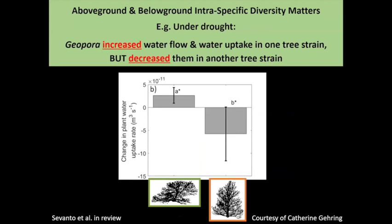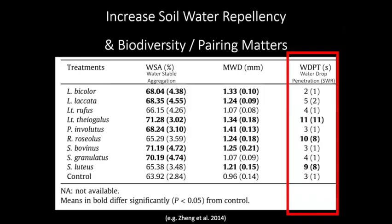Coming out of our lab at NAU, we looked at pinyon pines of the same locations and same species but two different genetic strains. Giopera is a genus of mycorrhizae, and in the tree it normally pairs with, under drought conditions — using a particle accelerator to get this information — water flow and uptake were increased. However, if you pair it with a tree species it doesn't normally pair with and force it on them, it actually decreases water flow and uptake. That diversity and pairing really matters.